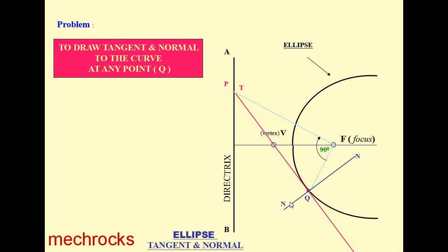NN represents the normal. T represents the tangent. Like this, you draw the tangent and normal to the ellipse at any point on the curve. Thank you for watching my video.